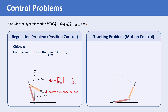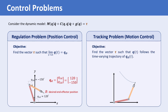In the tracking or motion control problem, the objective is to find the vector tau such that Q follows the time-varying trajectory Q sub D of T. Note that the vector of desired joint coordinates in the motion control problem is a time-varying vector, so the desired velocity of each joint can be obtained by taking the derivative of the desired trajectory of that joint.